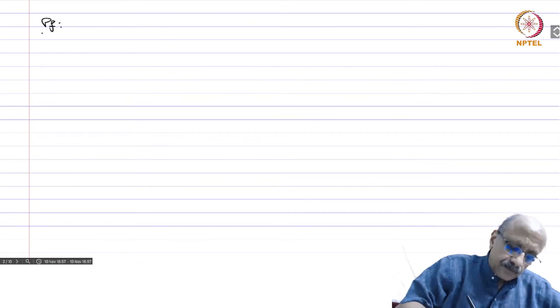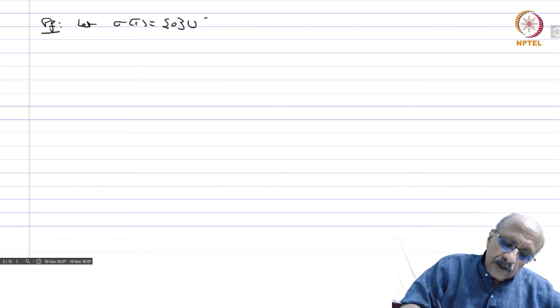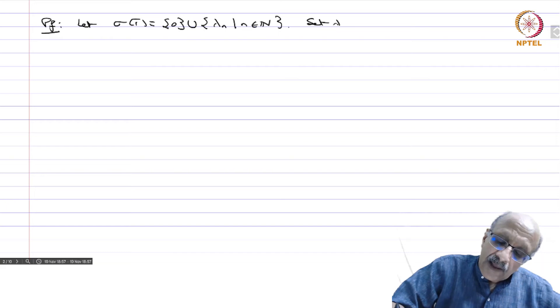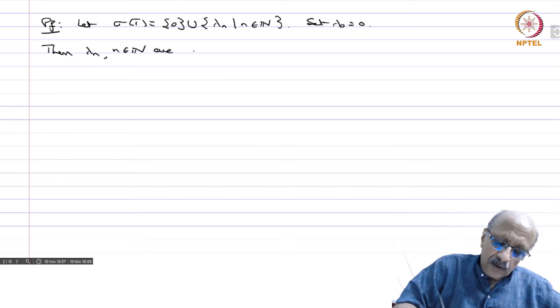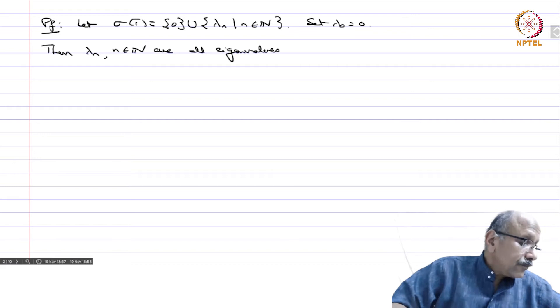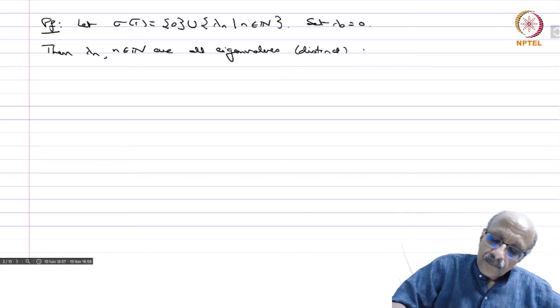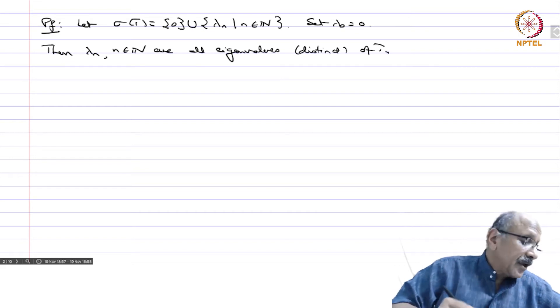Proof. Let sigma T equal to singleton 0 union lambda_n, n in N. Set lambda_0 equal to 0 and then lambda_n, n in N are all eigenvalues distinct of T.